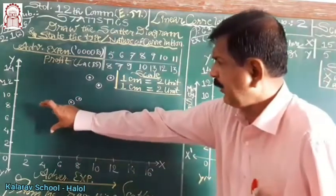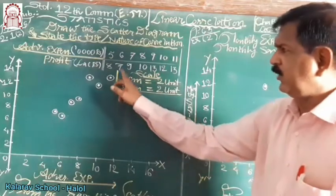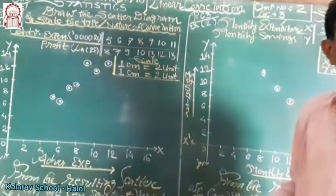Here, the plotted points are in the upper direction, from lower left corner to the upper right corner, and the correlation is said to be positive correlation.